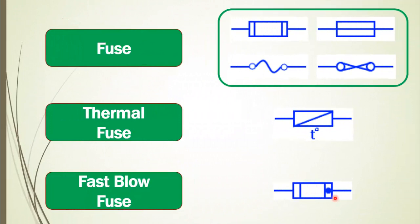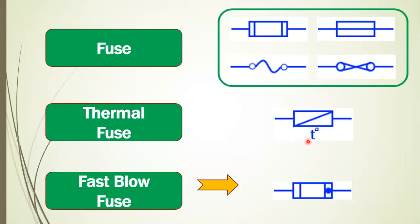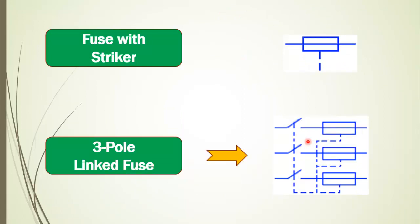Now come the different types of fuses. The first symbol is for the generic fuse, and we can have four different symbols based on both IEEE and IEC standards. Then is the thermal fuse, indicated by a T symbol, and the last one is the fast blow fuse. Another type is the fuse with striker, and then we have the three pole linked fuse which has three cartridges.